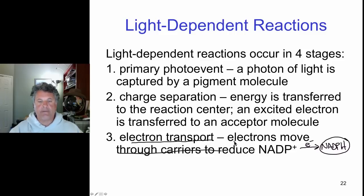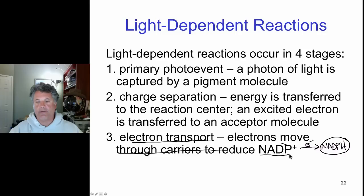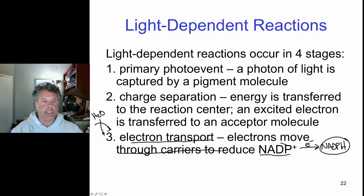In oxygenic photosynthesis, where does the photosystem get electrons to replace those transferred to carriers that eventually reduce NADP+ to NADPH? Those electrons come from water. Water donates those electrons, and that generates oxygen — oxygenic photosynthesis.